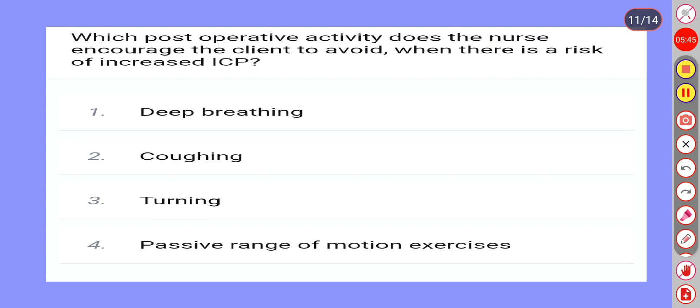Next question. Which postoperative activity does the nurse encourage the client to avoid when there is a risk of increased ICP? Option 1: Deep breathing. Option 2: Coughing. Option 3: Turning. Option 4: Passive range of motion exercise. Correct answer is Option 2: Coughing.